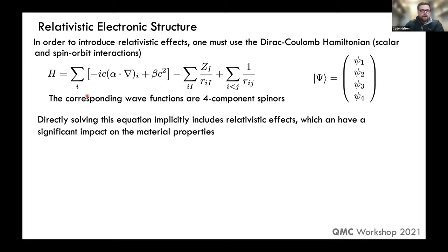We're going to start from the Dirac equation and work our way down to what we actually do in QMC. The Dirac equation has a modified kinetic energy, normal Coulomb interactions between electrons and ions, and electron-electron interactions. The alpha and beta in this relativistic Hamiltonian are four-by-four matrices, implying the many-body wave function is a four-component spinor. Solving this would include all relativistic effects with minimal approximations.